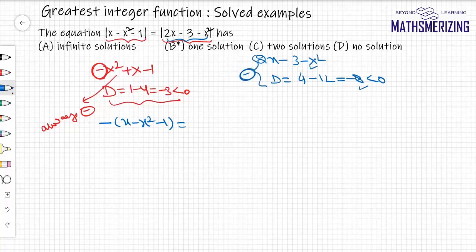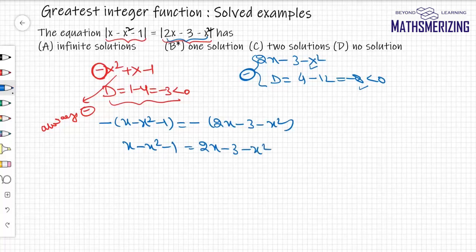Again if I have to remove this modulus, there will be minus of 2x minus 3 minus x squared. So I can write it as x minus x squared minus 1 equals minus 2x minus 3 minus x squared.